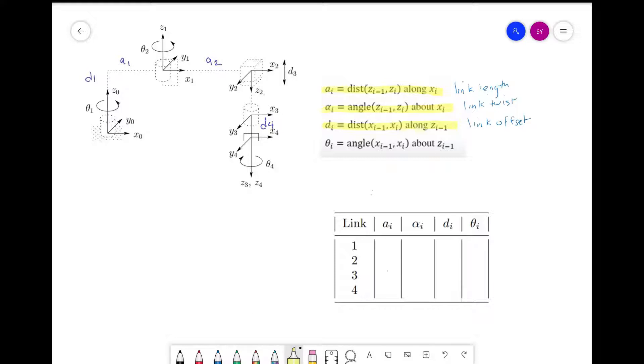The last parameter, theta_i, is the angle between x_{i-1} and x_i about z_{i-1}. We also need to account for any rotation needed to align x_{i-1} to x_i about z_{i-1}.